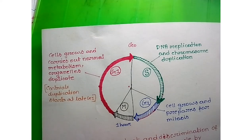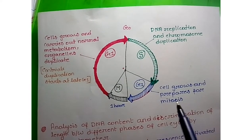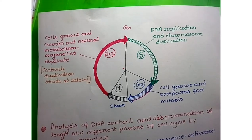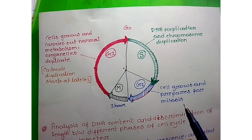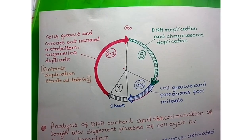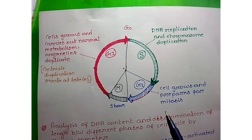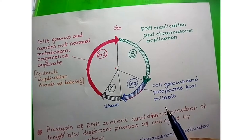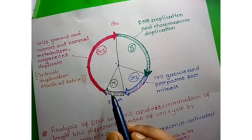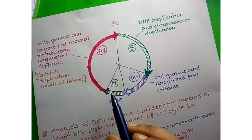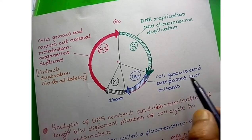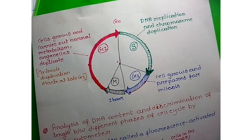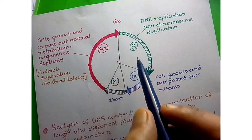In G2 phase, the cell grows and prepares for mitosis. The cell increases in size and synthesizes proteins needed for mitosis. Mitosis is a very complex process involving several types of cyclins, CDKs, and motor proteins, so G2 is an important preparation phase.